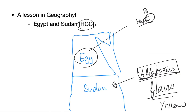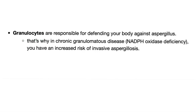I learned this from Harrison's Internal Medicine — an American textbook available to everyone. Granulocytes are the cells responsible for defending your body against aspergillus. Therefore, when you have problems with your granulocytes — such as in chronic granulomatous disease due to NADPH oxidase deficiency — you are at increased risk of invasive aspergillosis.